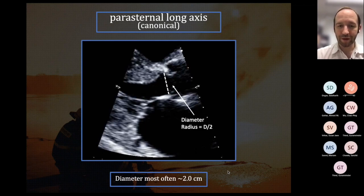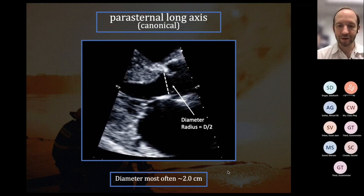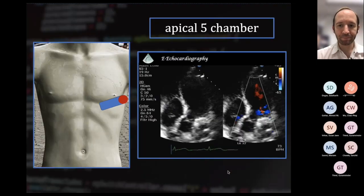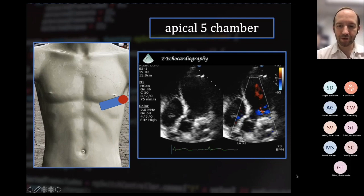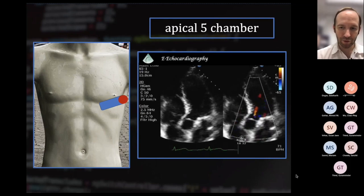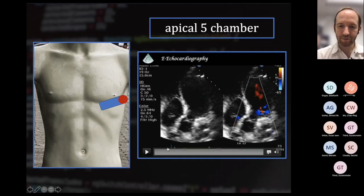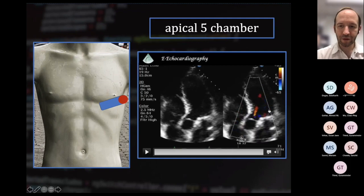Knowing the normal values for LVOT VTI will largely obviate the need for these calculations. As you're doing serial VTI measurements, you don't need to continue to measure the LVOT diameter, because that is relatively fixed. Next, move down to your apical four-chamber position, drop the probe angle down a little bit, and obtain an apical five-chamber view. I like to use color Doppler here, because you can see a nice laminar blue jet moving away from the probe out of the LVOT — that tells me I'm in the right position to obtain an acceptable LVOT VTI jet.